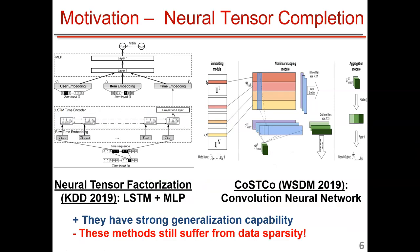Recently, neural networks have been widely used for the tensor completion task. The first work in this area is the NTF paper proposed at KDD 2019, which uses LSTM plus multilayer perceptron to estimate missing values. The CoSTCo paper uses convolutional neural networks, and the BOSS paper has strong generalization capability and high prediction accuracy. However, these methods still suffer from data sparsity — if the input tensor is very sparse, they cannot predict missing values well.